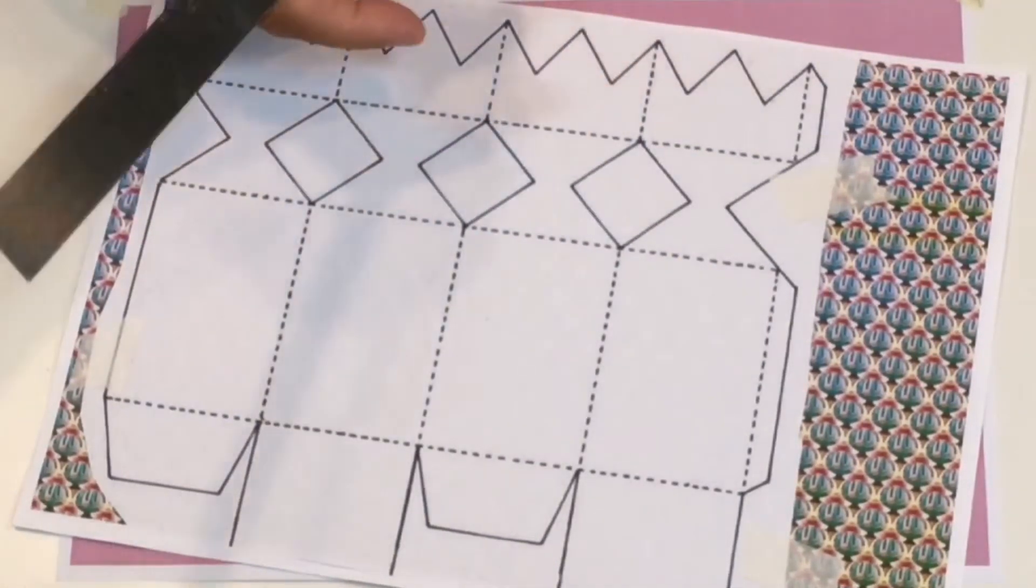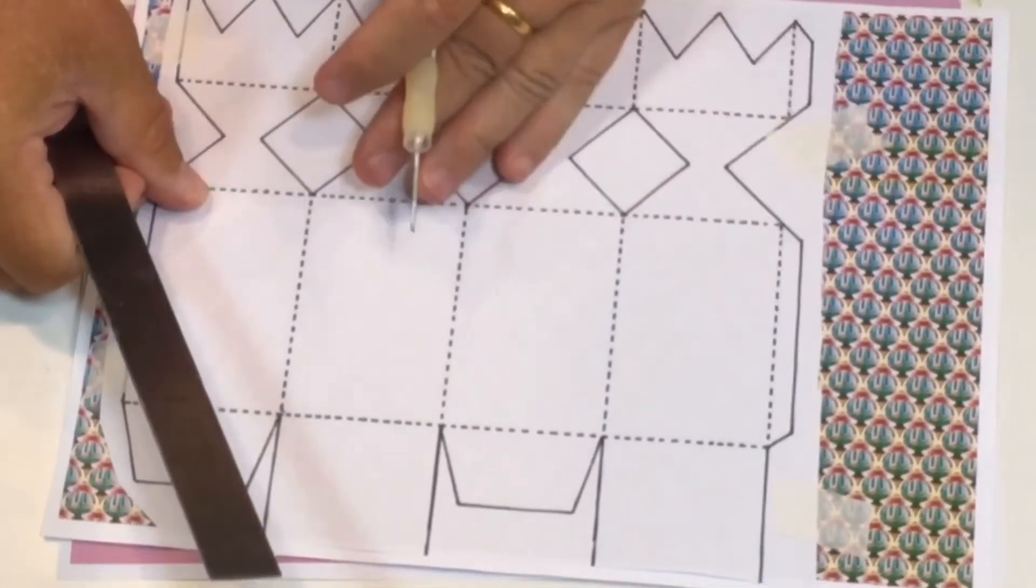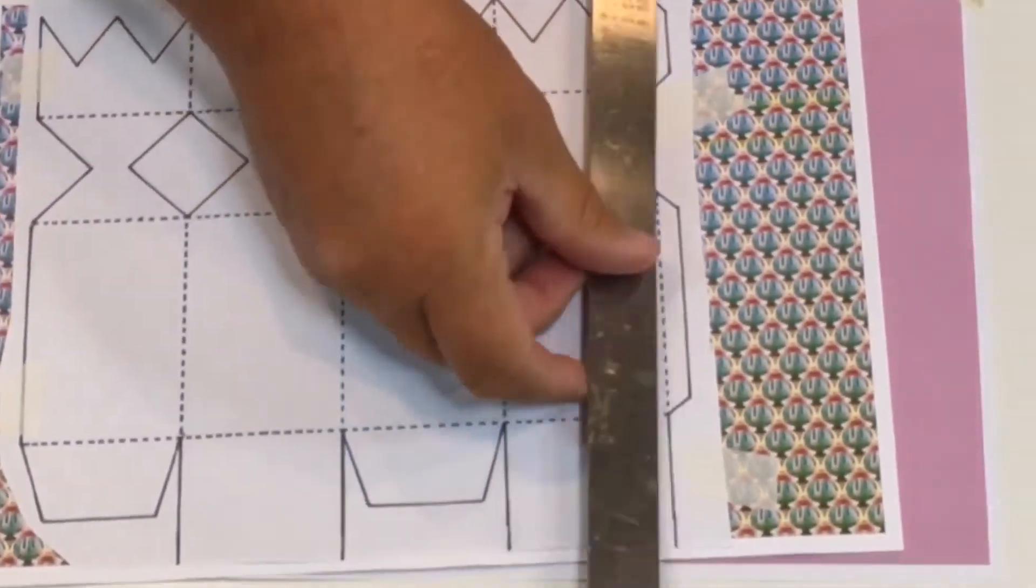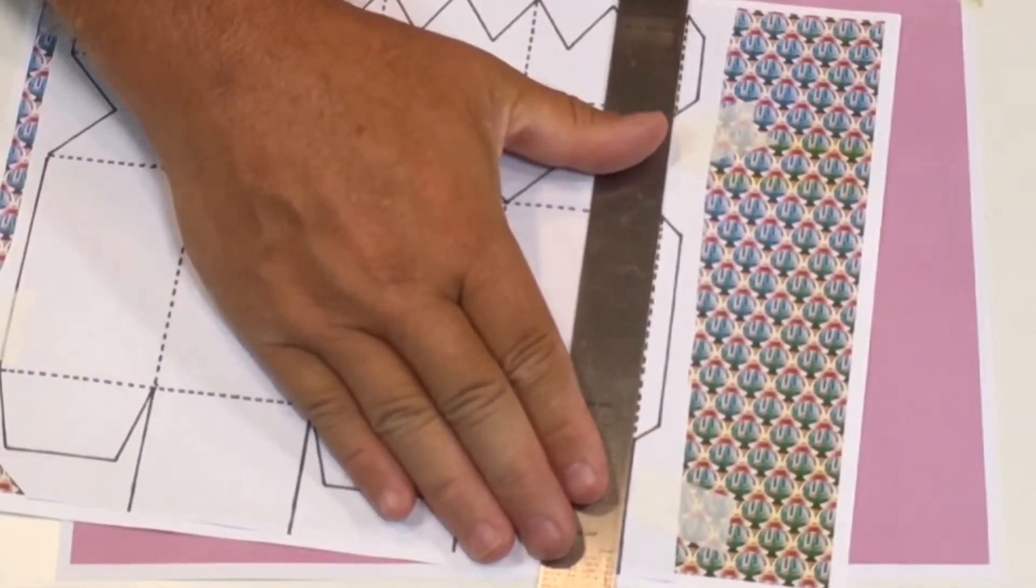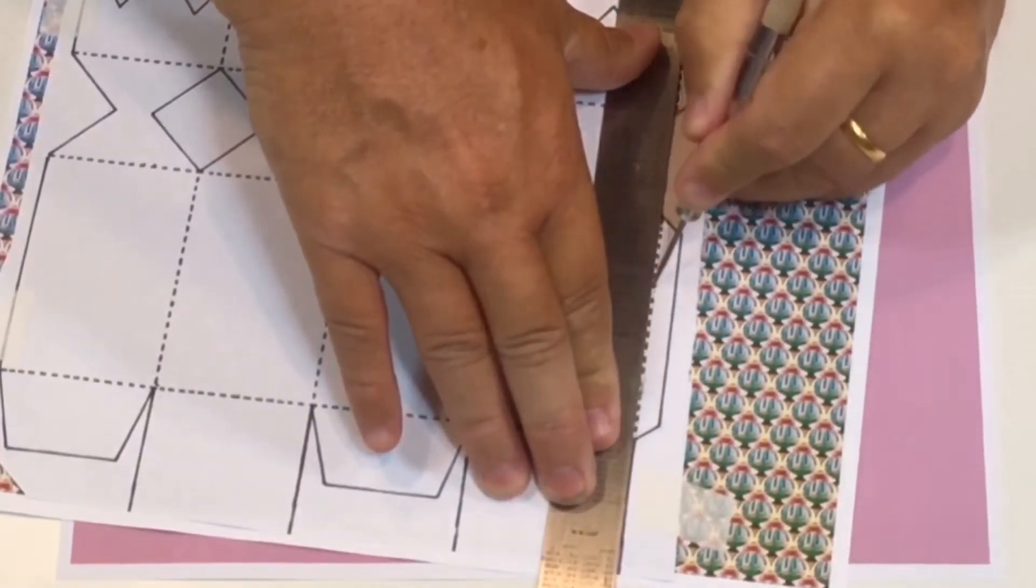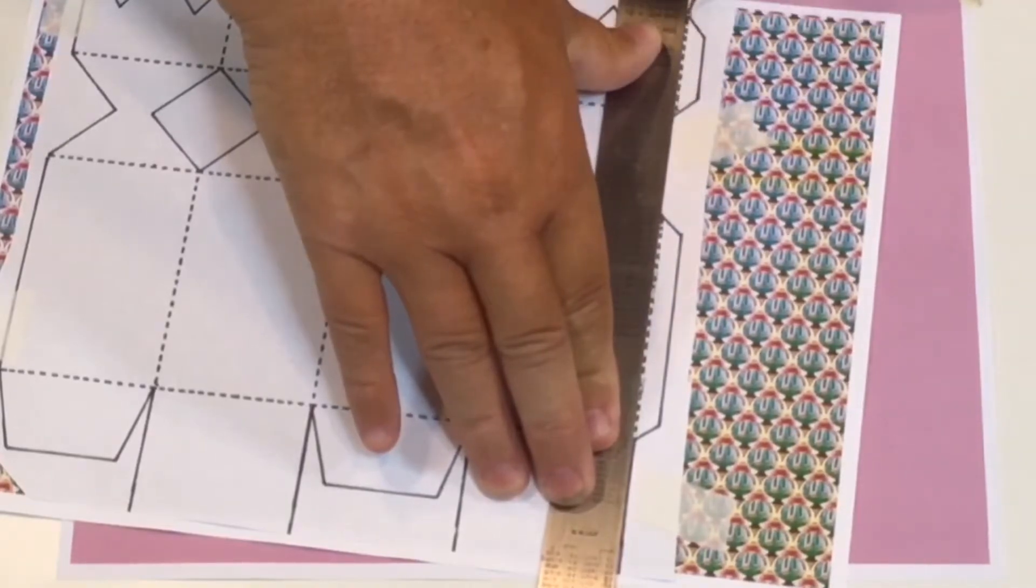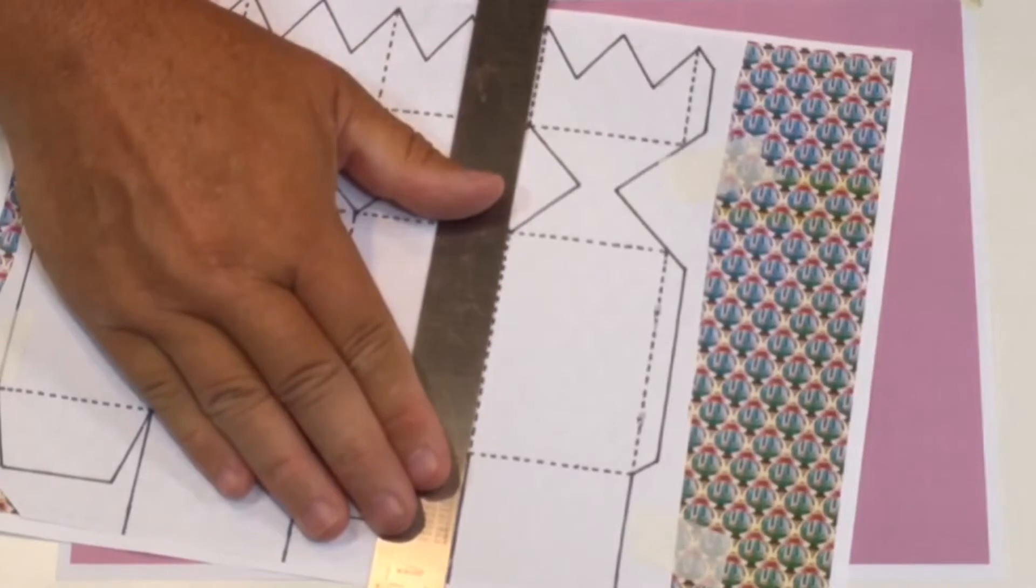Now I'm going to take my ruler and my embossing tool, and where you can see all the dotted lines, that's where you're going to fold. Now to help the fold, you just crease it using a ruler and an embossing tool or some tool that's pretty blunt.